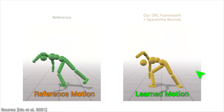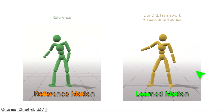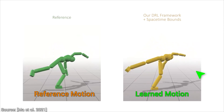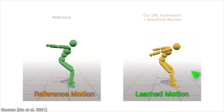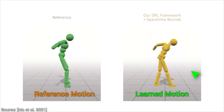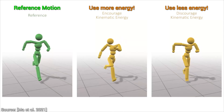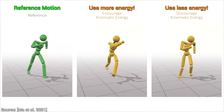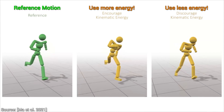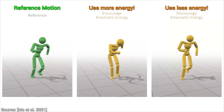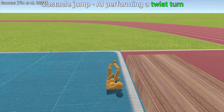Today, it is possible to teach virtual characters to perform highly dynamic motions like a cartwheel or backflips. And not only that, but we can teach an AI to perform this differently from other characters — to do it with style, if you will. But today, we are not looking to be stylish; today we are looking to be efficient.